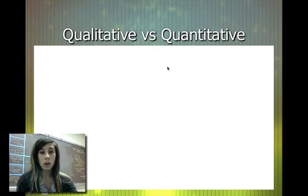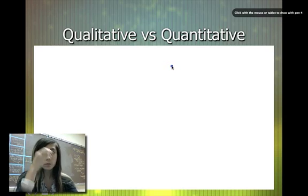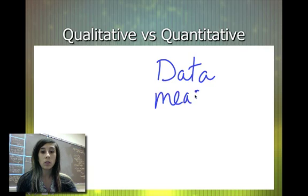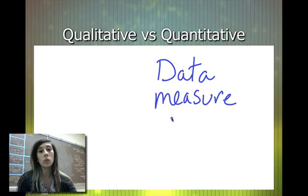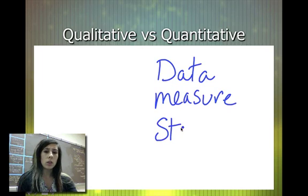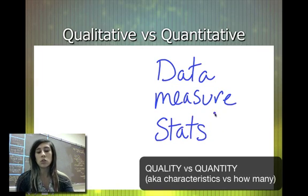Quantitative data are going to be things like measurable data. You can take a ruler to it, you can weigh it — things that basically give you numbers. Those are quantitative measurements, and typically you can run statistics on them. You can get percentages and study it through graphs.